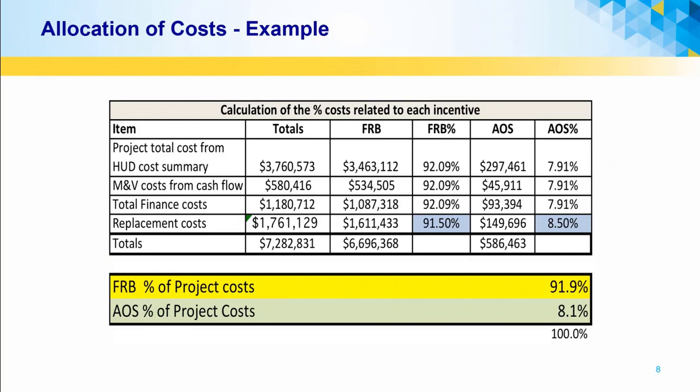Taking example figures for a hypothetical HUD cost summary or approval letter, the total project costs, M&V costs, debt, financing costs, and replacement reserve costs are summed to determine the project costs. For the project, this is calculated in aggregate, but for each repayment year, the actual costs for debt, M&V, service fees, and replacement reserve are used to determine excess savings.